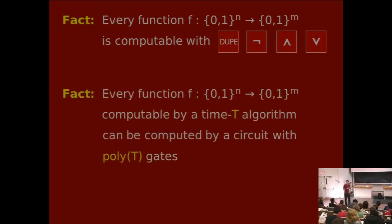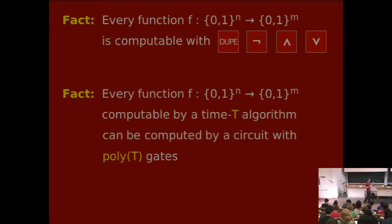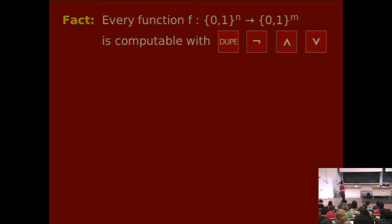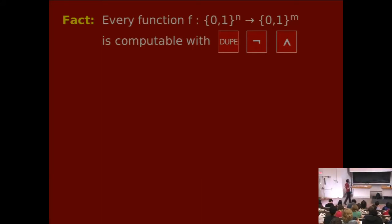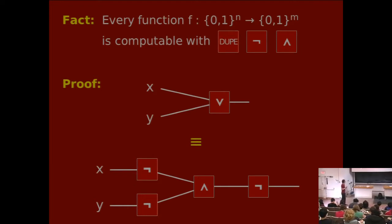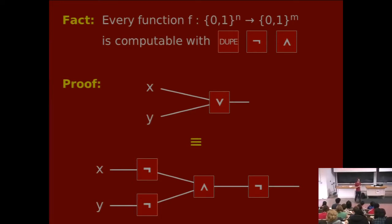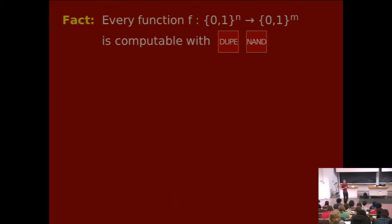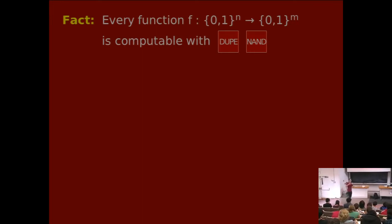It's also true that any function you can compute efficiently with an algorithm in time T, you can compile that algorithm into a circuit that has poly T gates. Another thing you may know if you're into nerdy things like this: you don't actually need OR gates, because if you have an OR gate, you can convert it into the negation of the AND of the negation of the bits. That's De Morgan's Law.